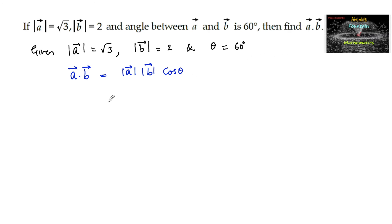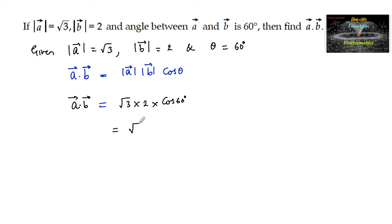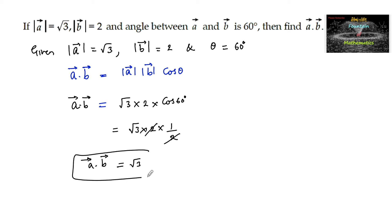Therefore A dot B is equal to mod A which is root 3, mod B which is 2, and cos 60 degrees. That is root 3 into 2 into cos 60 which is 1/2. So we can conclude that the dot product of these two vectors A and B is equal to root 3. So A dot B equals root 3 is the answer.